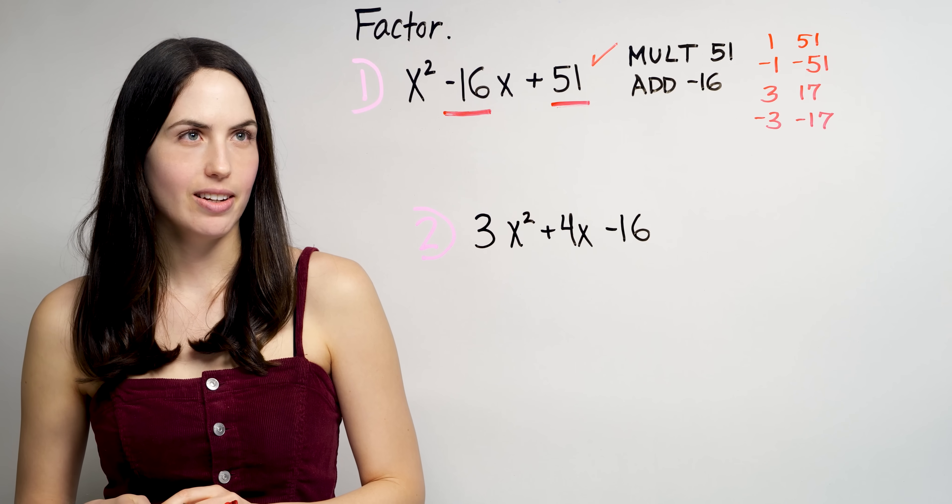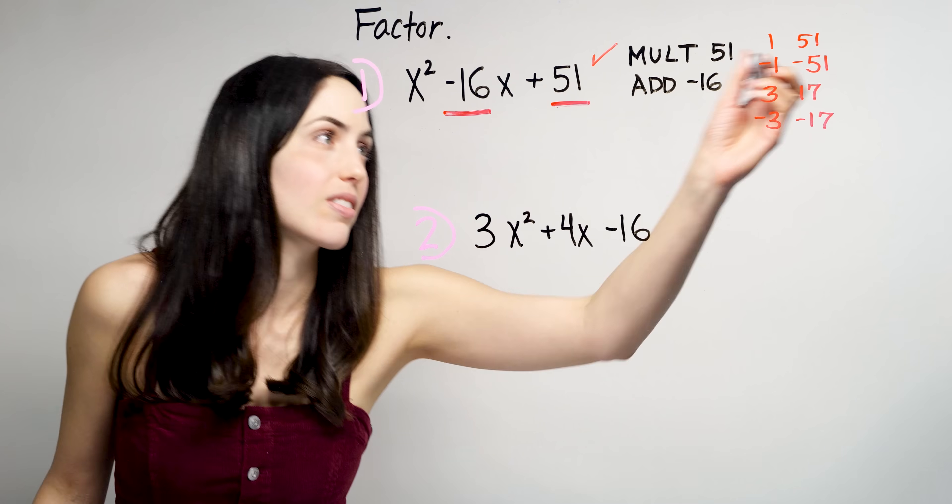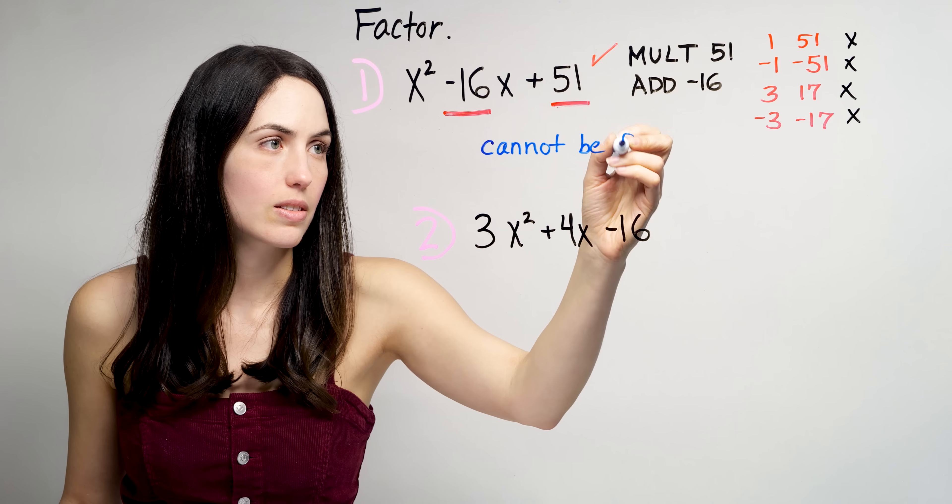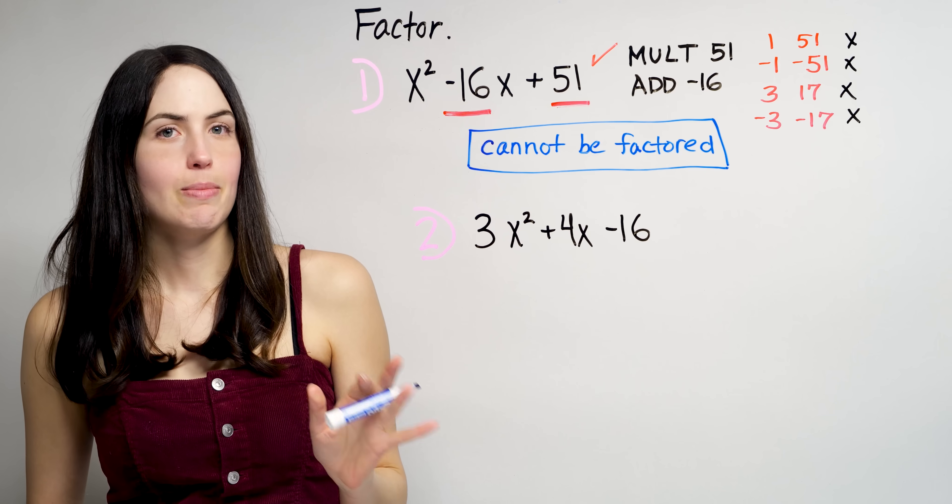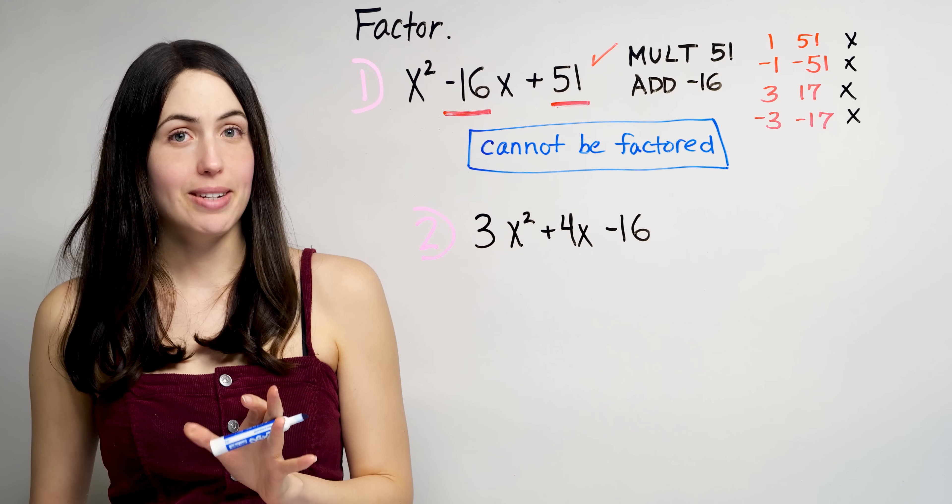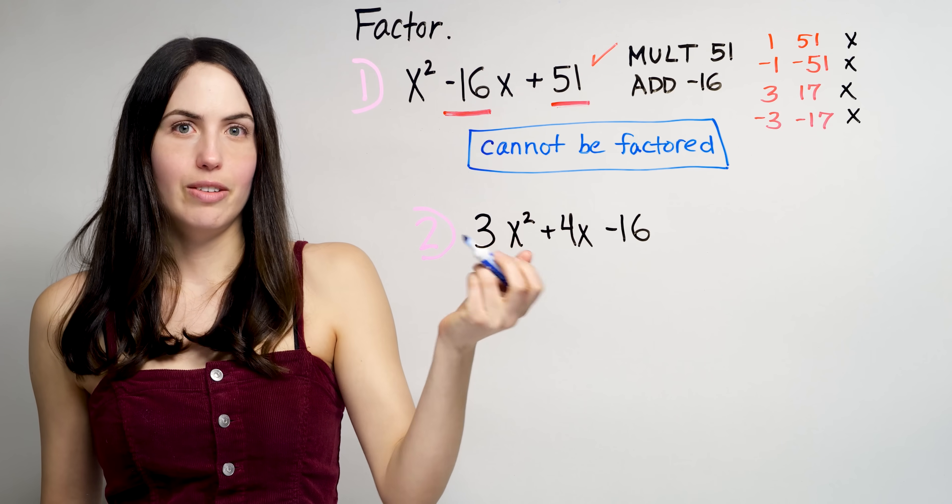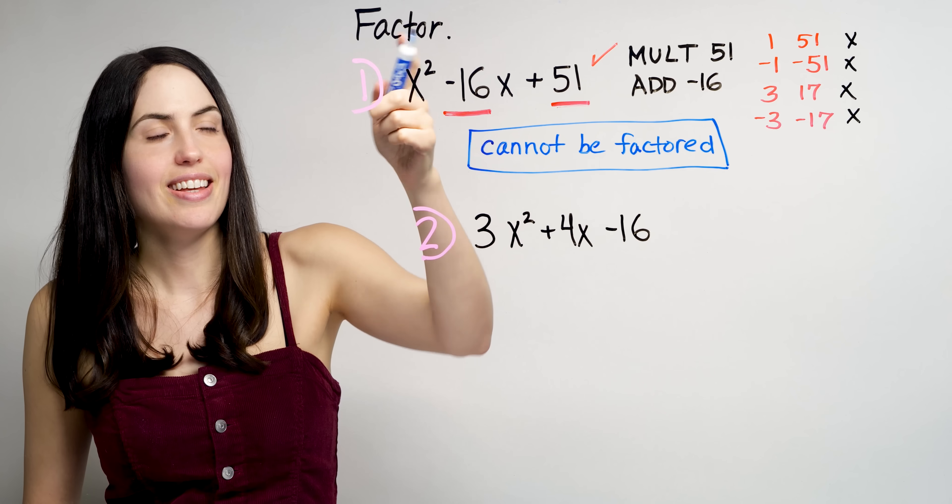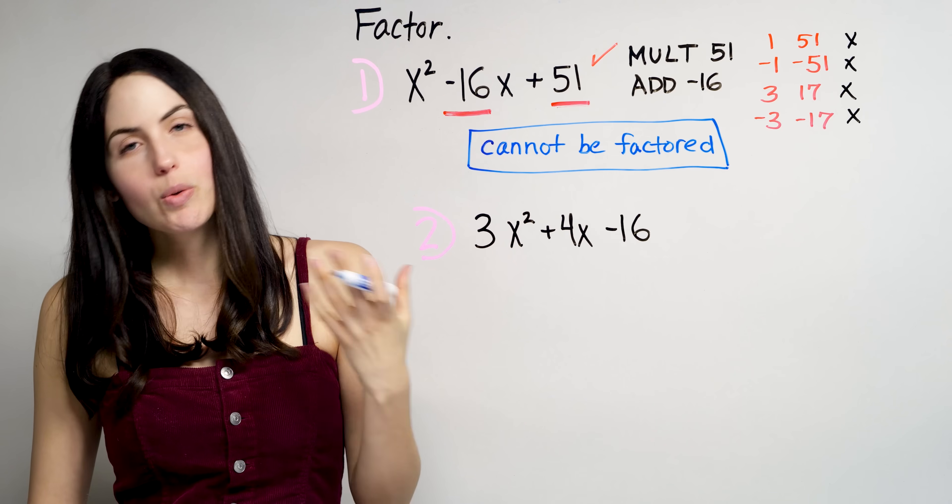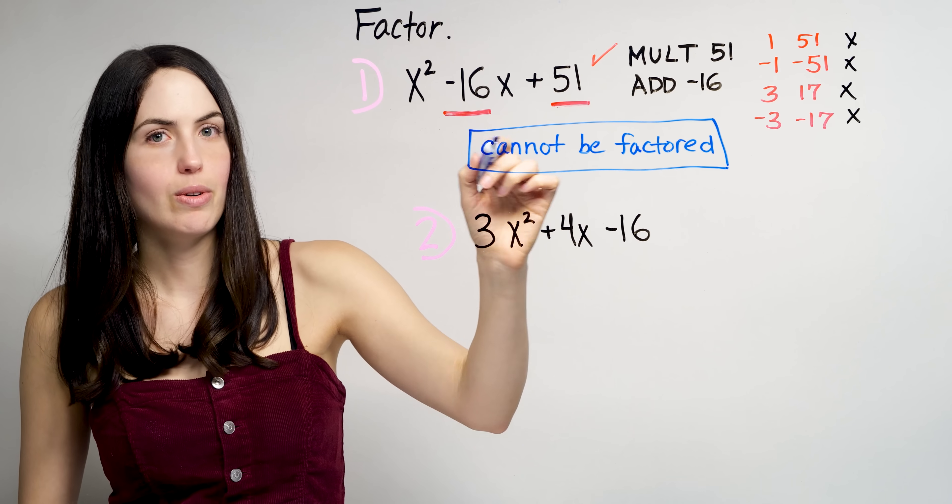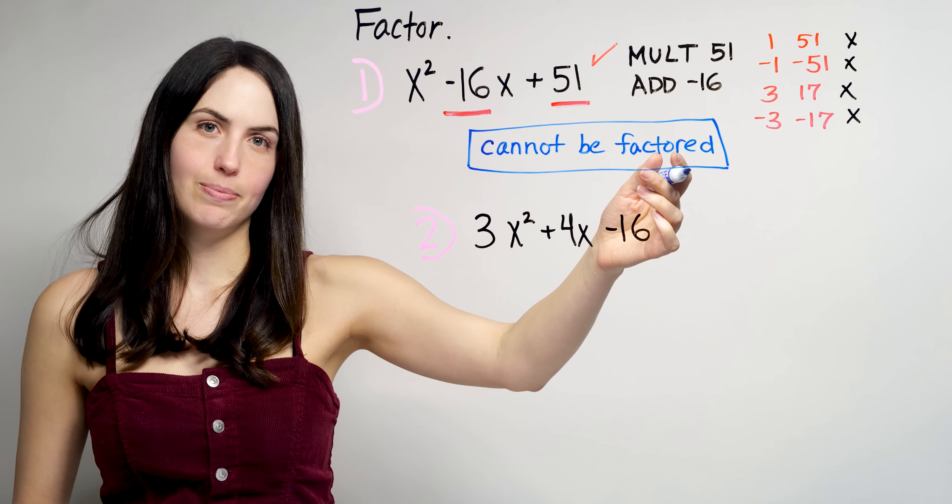It turns out, sometimes the quadratic expression you're given cannot be factored. I don't think I ever mentioned this in my Factoring Quadratics video. That's why I'm telling you now. Because sometimes the instructions just say factor, and then a few of them can't be factored. I mean, if they're generous, they say, factor, if it can be, if it cannot be, state so. If you're working on this and you can't find two numbers that multiply to what you want and add to what you want, it might be the case that it cannot be factored. It's unfactorable.